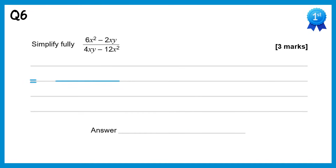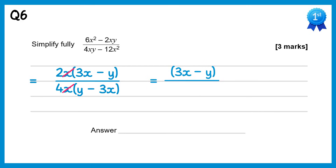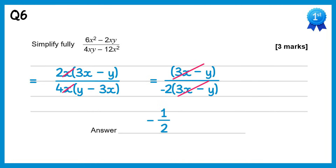When you factorise the top of this one you get 2x lots of 3x minus y, and on the bottom you get 4x lots of y minus 3x. We can cancel the x's and also cancel the 2 over 4 to get one half, so we end up with 3x minus y over 2 lots of y minus 3x. Notice how the brackets on the top and bottom are the same apart from the signs being reversed. If we factorise out negative 1 on the bottom, the signs will reverse — so instead of 2 lots of y minus 3x, we get negative 2 lots of 3x minus y. The 3x minus y's can now cancel, so you end up with negative one half.